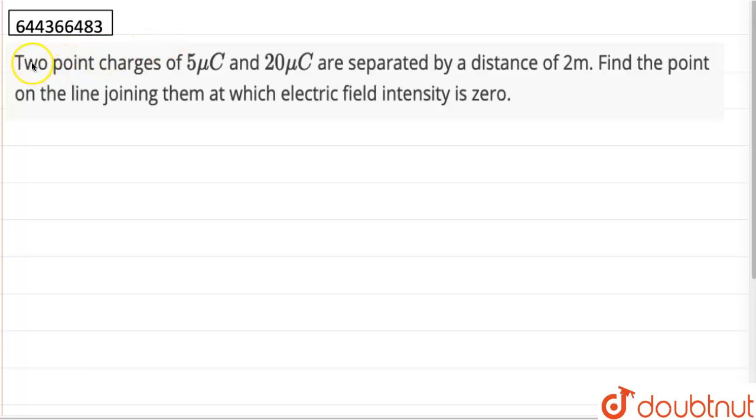Hello, so the question here is two point charges 5 micro coulomb and 20 micro coulomb are separated by a distance of 2 meters. Find the point on the line joining them at which the electric field intensity is 0.